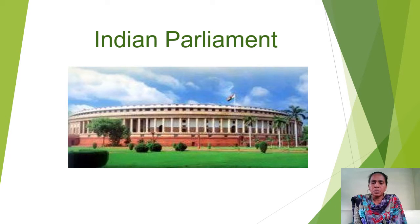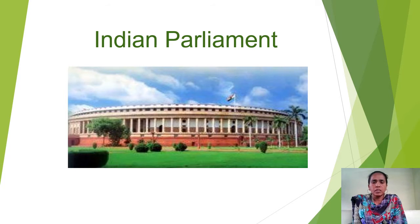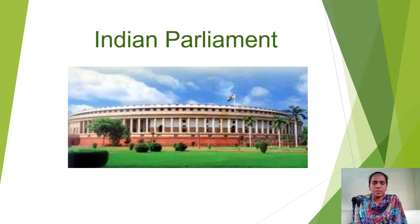Indian Parliament earlier was the Constituent Assembly. Since 1946 to 1949, the Founding Fathers of the Indian Constitution sat in this building only and wrote the Indian Constitution. So after the completion of the Indian Constitution, the Indian Government changed this Constituent Assembly into Indian Parliament. So now it is acting as the Union Legislature. The constitution-making fathers adopted the British Westminster model of parliamentary system to India.